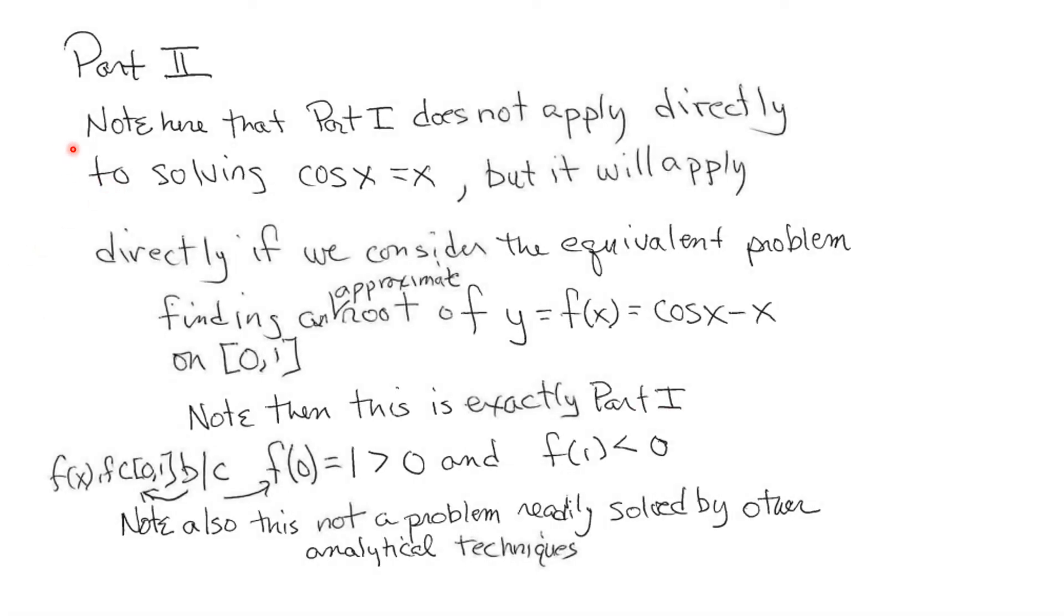Note that Part 1 does not apply directly to solving cos(x) = x, because we're not finding the root of an equation where f(x) = 0. But it will apply directly if we consider the equivalent problem, that is, finding an approximate root of y = f(x) = cos(x) - x, and we're looking for a solution in [0, 1], which is where the solution will lie. So this was the essence of the problem. You had to change it into something we can do.